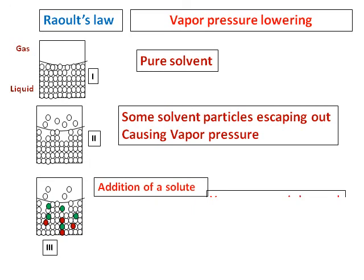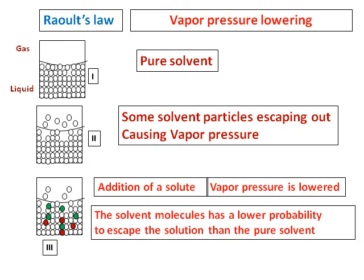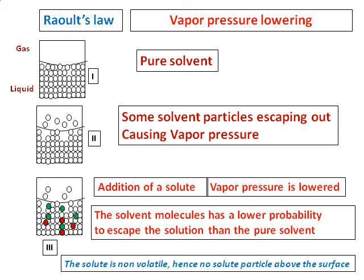Now consider the same solvent — I add some solute. That is figure number 3, and the red and green dots represent the solutes. These hinder the water molecules from escaping into the gas phase. You can see there are fewer molecules in the gas phase compared to figure number 2. Hence, the vapor pressure is lowered. This diagram has no solute particles in the gas phase because this is an example of a non-volatile solute.